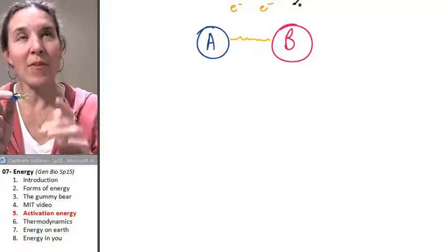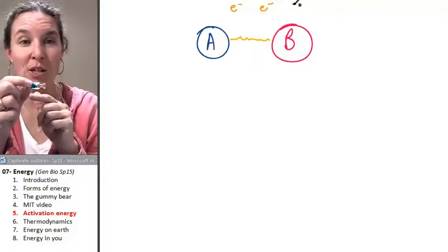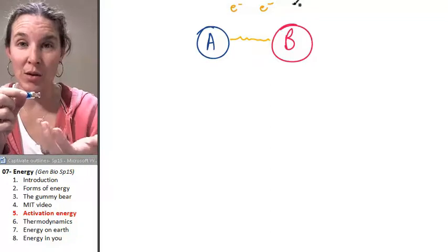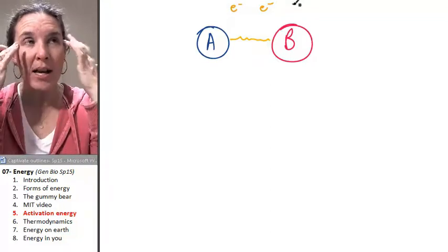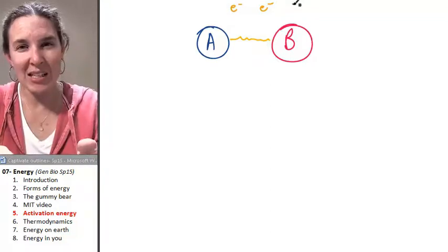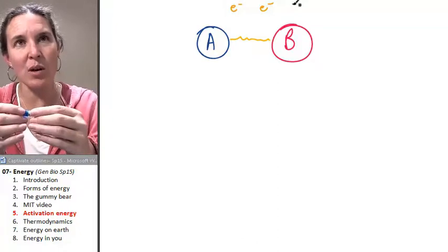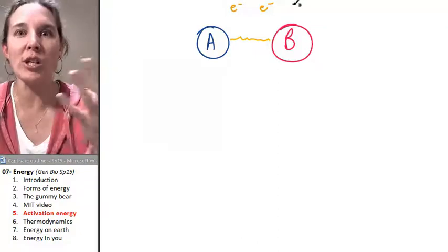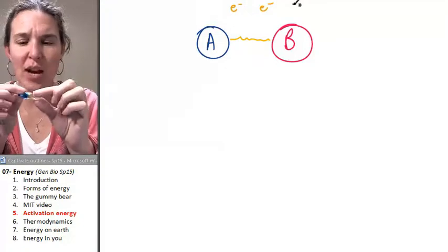If I wanted to break the chemical bond between my two magnet molecules, am I going to have to put energy in to do that? Or do you think energy is going to be released to break these two apart?